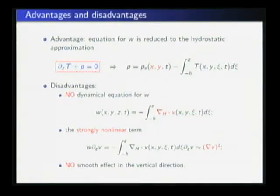Since the primitive equation is derived from the Navier-Stokes equations, it's natural to compare these two systems. The advantage for the primitive equation is that now the equation for w is reduced to the hydrostatic approximation. From here, we can see that p can be expressed in terms of T up to a barotropic part as shown here. However, this barotropic part depends only on two spatial variables. That's the key point.